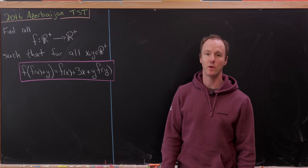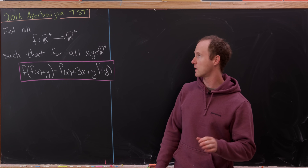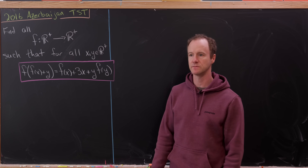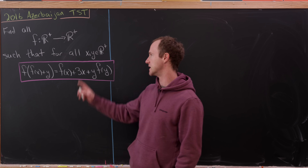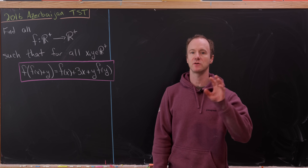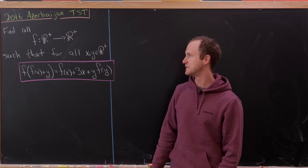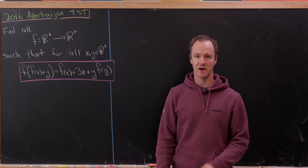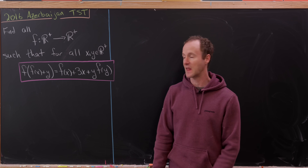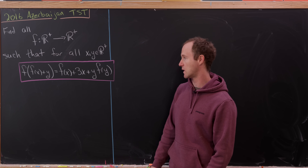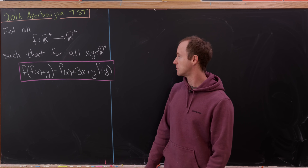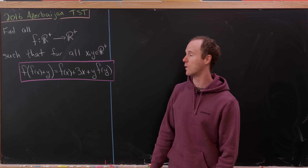Today we're going to look at a pretty cool functional equation problem from an Azerbaijan team selection test. We've got a function from the positive real numbers to the positive real numbers satisfying the following condition: f(f(x) + y) = f(x) + 3x + y · f(y).